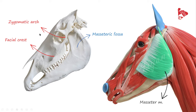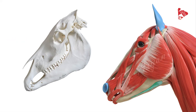From its origin and insertion, the function of the masseter muscle is to elevate the mandible and press it against the maxilla. Contraction of this muscle moves the mandible toward the maxilla, helping with mastication.